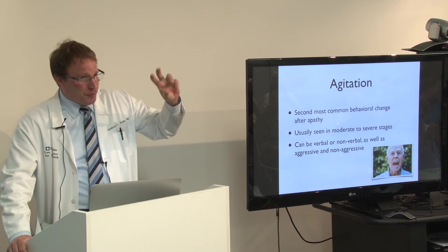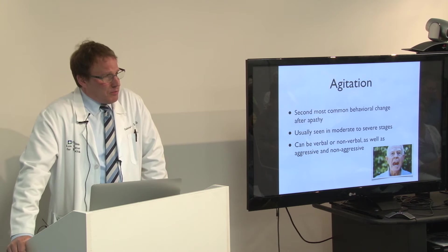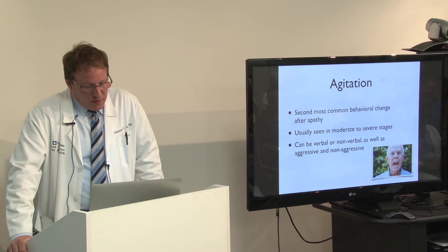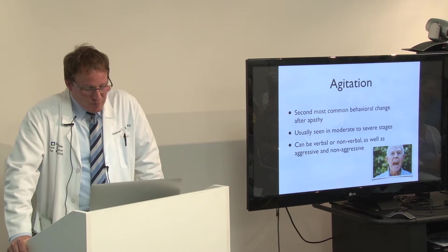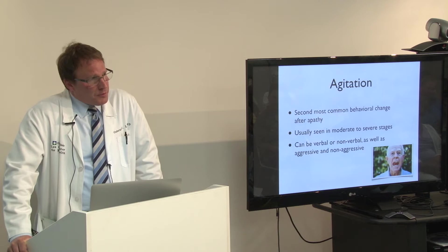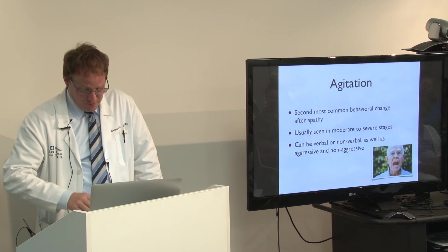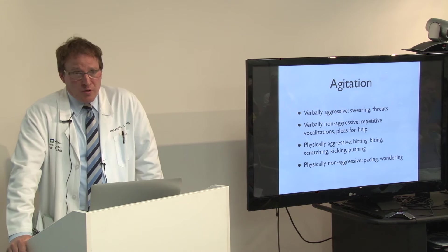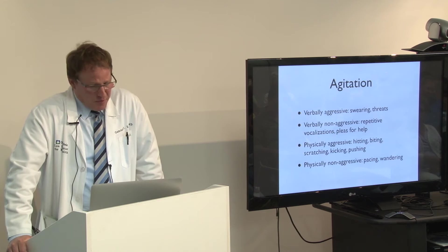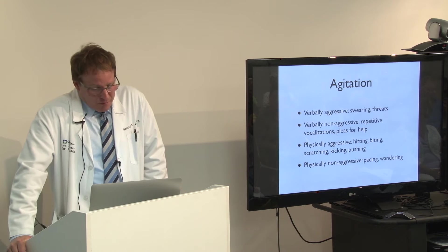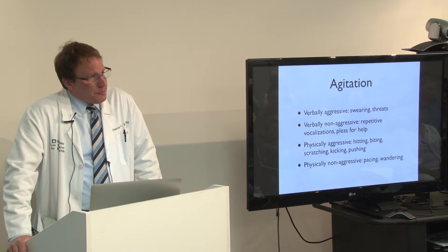Agitation is probably the most significant problem any caregiver has to deal with. It's the second most common behavioral change after apathy. It's seen in the more moderate and severe stages, and it can take a couple of different forms. Scientists have divided it into verbal agitation or non-verbal agitation, and aggressive or non-aggressive agitation. Verbally aggressive examples include swearing and making threats. Verbal non-aggressive includes being repetitive, saying the same things over and over again, or pleas for help when there's no clear problem you can pinpoint.